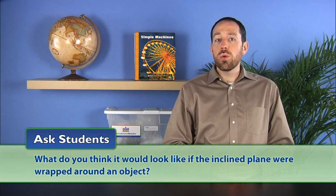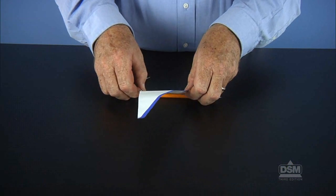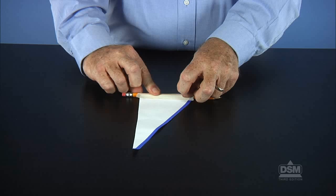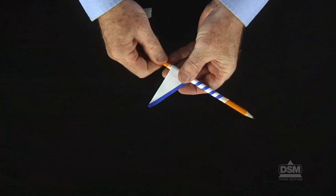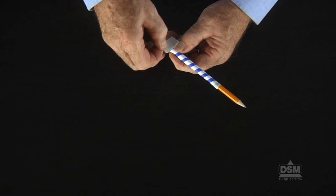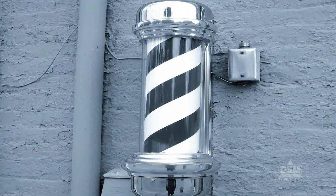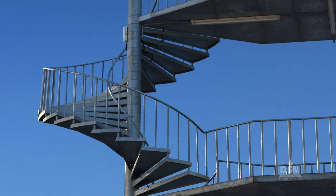Then ask, what do you think it would look like if the inclined plane were wrapped around an object? Accept all student responses. Instruct students to tape the 10 centimeter side of the triangle to their pencil, wrap the triangle around the pencil so that the marker line is visible, and secure the edge with a small piece of tape. After the teams have finished wrapping their pencils, ask students, what does the wrapped pencil look like? Student answers may include barber poles, candy canes, spiral staircases, and so on.